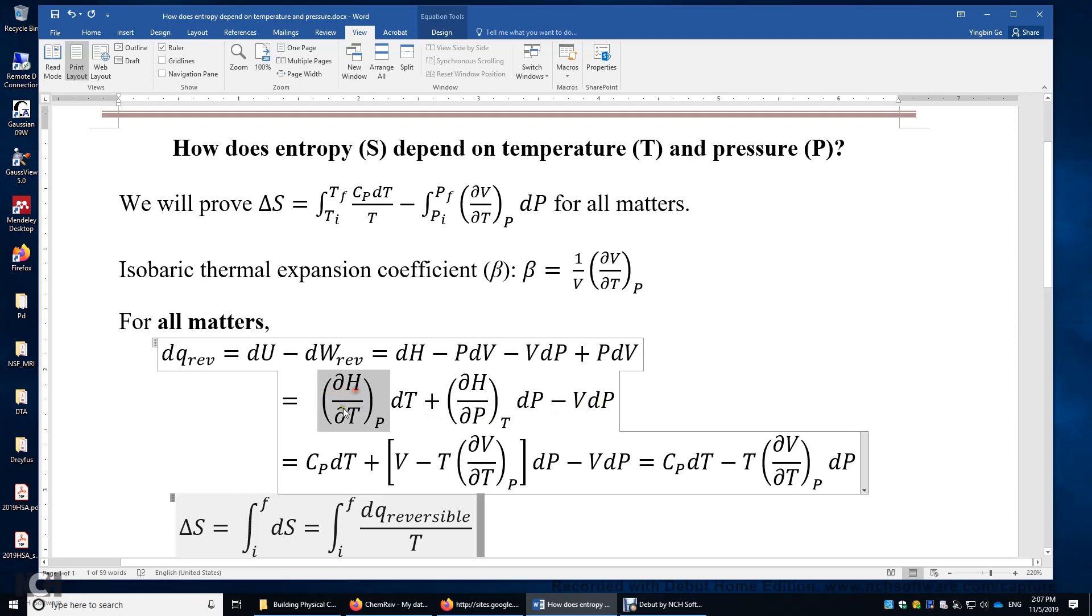Delta H over delta T in the isobaric process is simply C sub P, because we can easily prove DH equals DQP. And then, delta H over delta P in the isothermal process is equal to V minus T times delta V over delta T in the isobaric process. This can be easily proved using one of the four Maxwell relations.